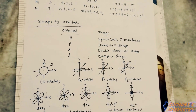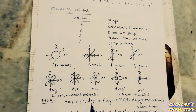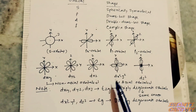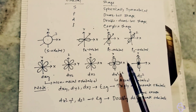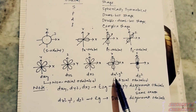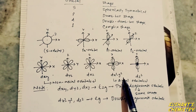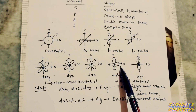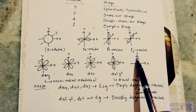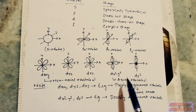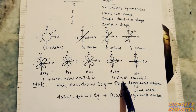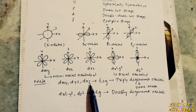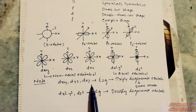The lobes of the dxy, dyz, and dzx orbitals lie in between the axes, so these three orbitals are called non-axial orbitals. The lobes of dx²−y² and dz² are present along the axes — along x, y, and z — therefore these two orbitals are called axial orbitals.